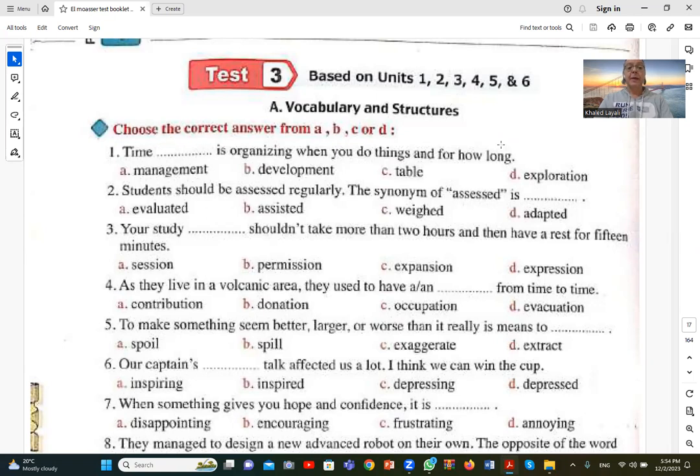Number two. Students should be assessed regularly. The synonym of assessed is الطلبة لازم يتم تقييمهم بشكل مستمر. The synonym is evaluated, which is A. Assessment and evaluation both mean التقييم, so assessed equals evaluated, A.